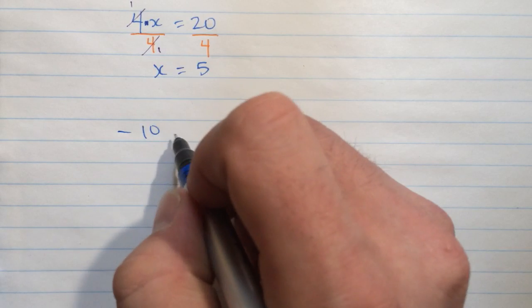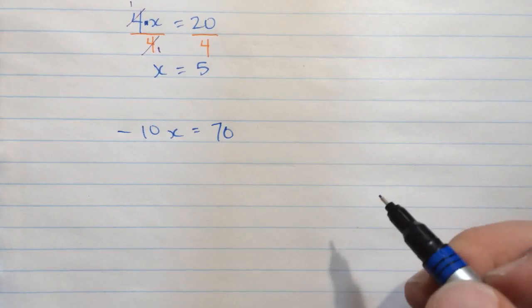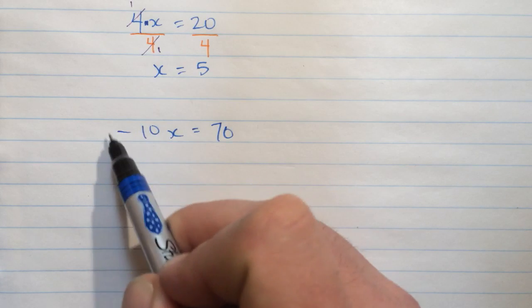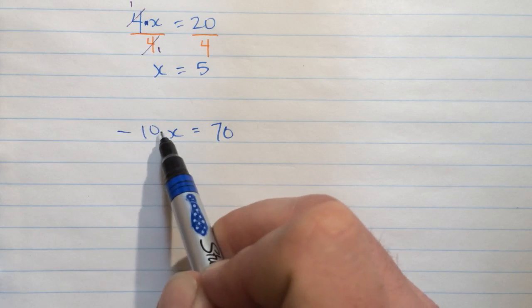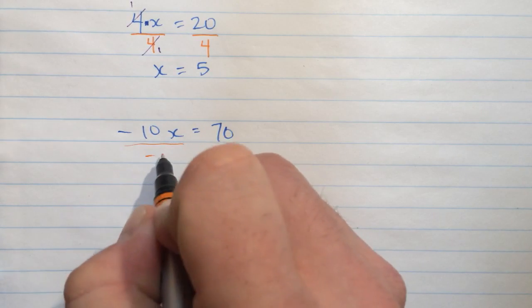Let's try another one. Here's negative 10 times x equals 70. Once again, we are multiplying x by negative 10. Include this negative here. And so if I perform the inverse operation, that'll be dividing by negative 10.